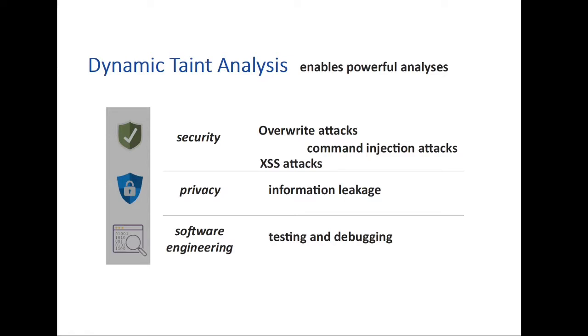It's important to note that taint tracking or taint analysis is not limited to program analyzes only. It can be very useful in several domains such as security, privacy, software engineering, etc. For example, preventing command injection or cross-site scripting, detecting information leaks as well as software testing, debugging, profiling, and other software engineering applications to name just a few.